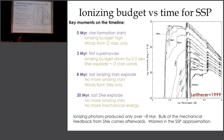This continues until maybe 30 to 40 megayears when the very last supernovae go off. So we have a situation where the bulk of the ionizing photons are produced at a time when you haven't had very much feedback, and by the time you get the most efficient feedback, you haven't got any ionizing photons left.